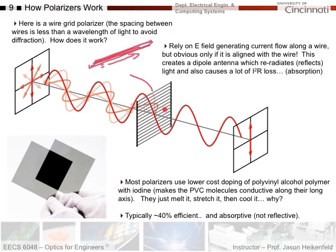What about light polarized perpendicular to the wires? For that case the E-field is oriented across the wire. The electrons can only move a tiny bit — they can't travel back and forth along the wire. There's no distance for them to move, so you get almost no current, no optical absorption, and that polarization of light passes straight through. That's essentially how a polarizer works.